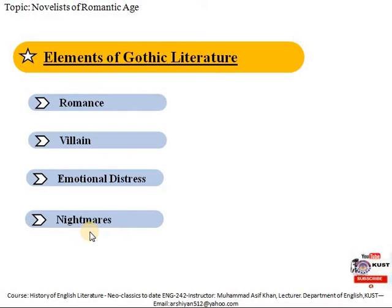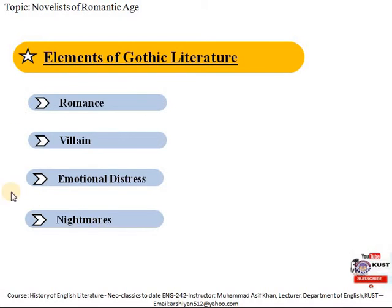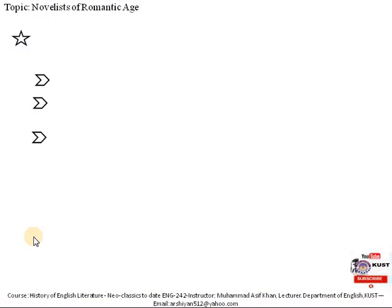Nightmares have a very ancient relationship with the act of anticipating something — foretelling, predicting, or giving foresight of events. Gothic writers used these nightmares to further increase and deepen the evocative and haunting aspect of a novel's plot. Now let's move towards the first most important Gothic novelist of that age — Horace Walpole.